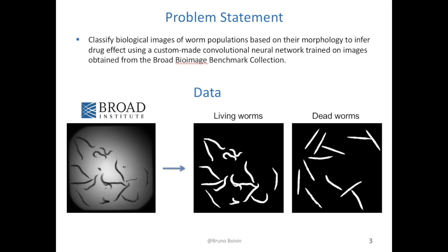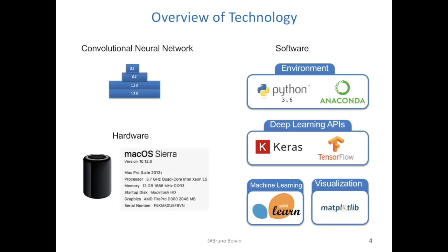The problem in reality is that given the high throughput imaging tools available, scientists have been collecting images at a rate beyond their ability to classify them. To address this, I implemented a convolutional neural network using the software packages listed on the right.